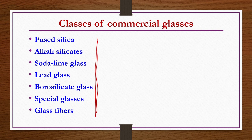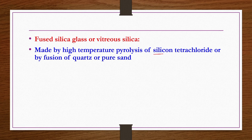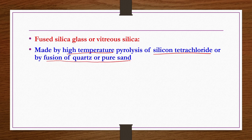We cannot cover each and every detail of all commercial glasses, so we see a few basic characteristics of each group and then go into the manufacturing of flat glass. Starting with fused silica or vitreous silica: it is made by pyrolysis of silicon tetrachloride at very high temperature — around 1200 degrees centigrade — in an inert atmosphere. It can also be produced by fusion of quartz or pure sand, and is sometimes referred to as quartz glass.